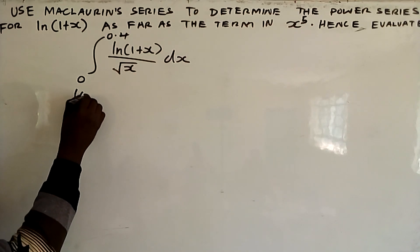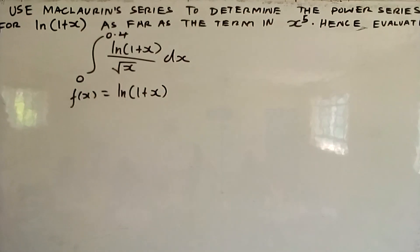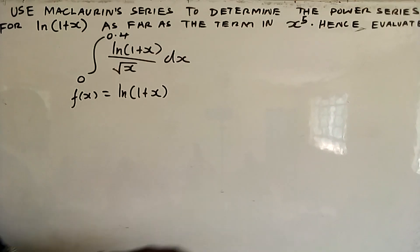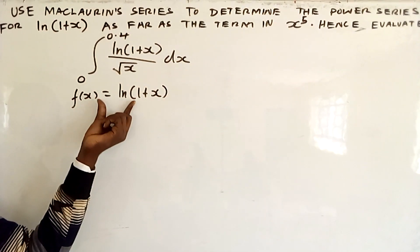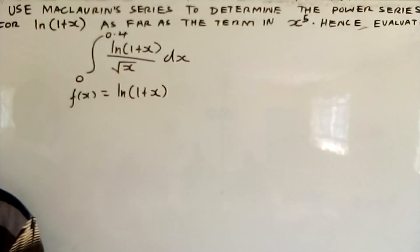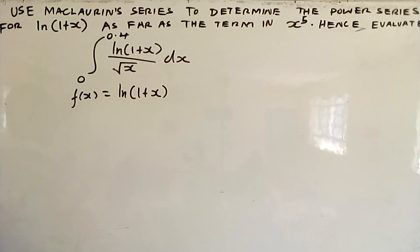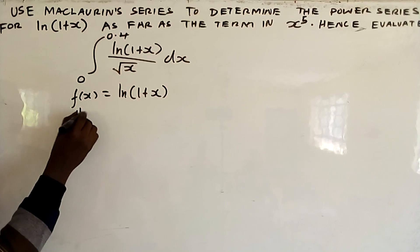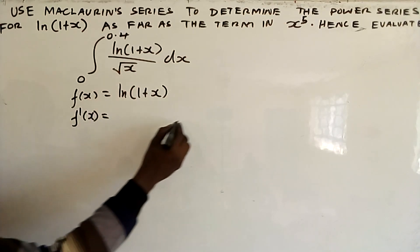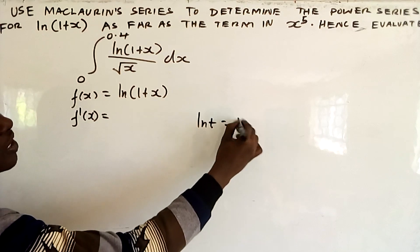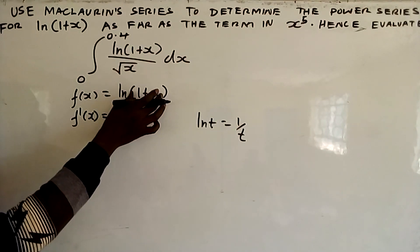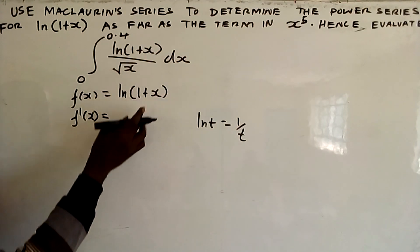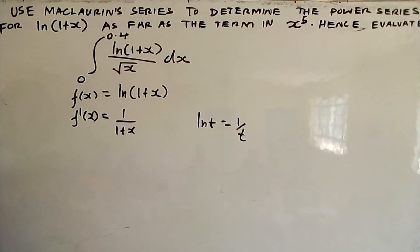So f(x) = ln(1+x). To get up to x raised to power 5, we have to differentiate it 5 times. If you differentiate ln(1+x) for the first time: when you differentiate ln(t), you get 1 over t, and here t is (1+x), so you get 1 over (1+x).